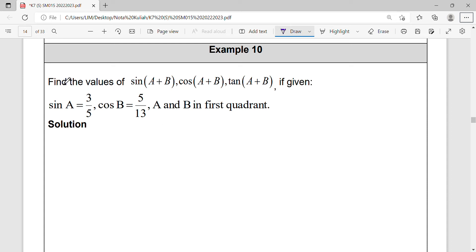Okay, so next example. Find the value of compound angle sine, compound angle cosine, and compound angle tangent, given that for angle A, sine A equals 3/5, cosine B equals 5/13, and A and B is in the first quadrant.